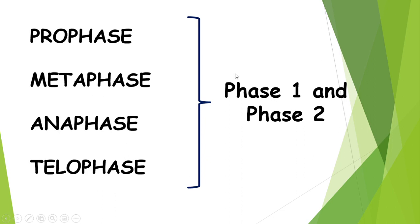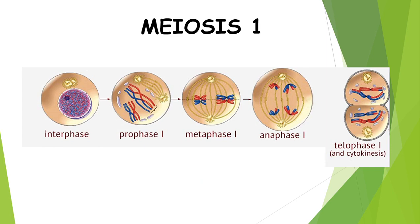As mentioned in the previous video, we can't just have one division for meiosis — we have to have two. Because we have two divisions, we keep the names the same but add a number — either a one or a two — to indicate which phase of meiosis we are in. So we have prophase 1, metaphase 1, anaphase 1, telophase 1, and then prophase 2, metaphase 2, anaphase 2, and telophase 2. You can use regular numbers or Roman numerals, but you must always include a number when dealing with meiosis.